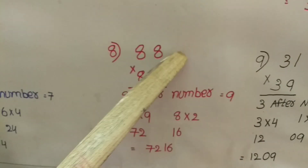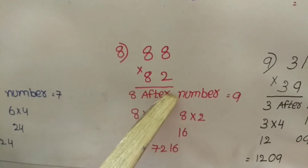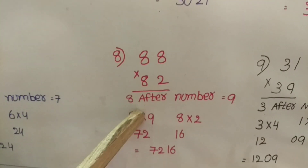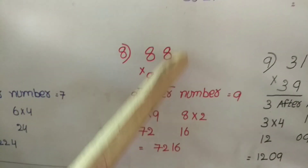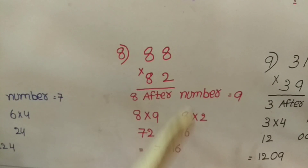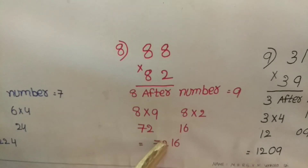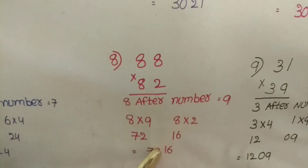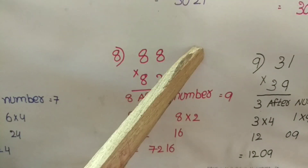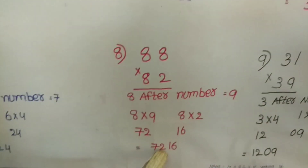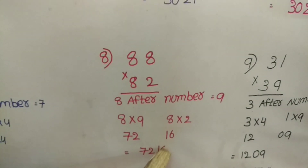Another example: 82 into 82. The tens digit 8, the next number is 9. 8 into 9 is equal to 72. Units multiplication: 2 into 2 is equal to 4, giving 04. Now the answer is 7216. 82 into 82 is equal to 7216.